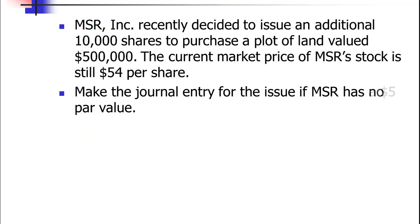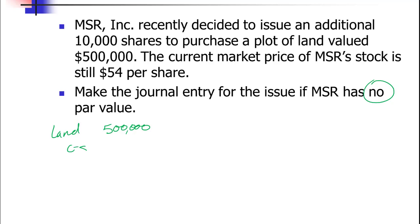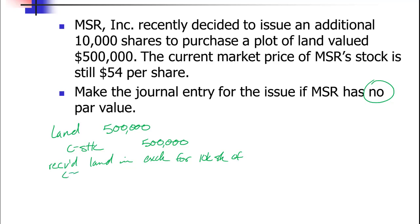What would this look like if there was no par value? We debit land for $500,000 and credit common stock for $500,000 — that's it. We received land in exchange for 10,000 shares of common stock.